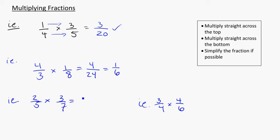For this one, 2 times 3 gets me 6, 5 times 7 gets me 35. There's nothing that both of those share in common, so I'd be done right there.